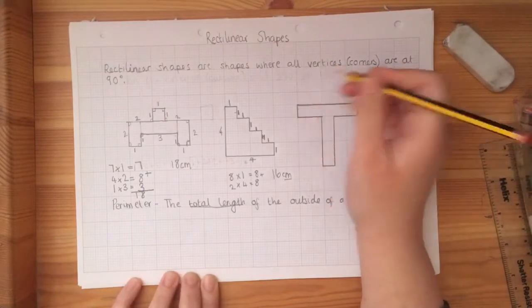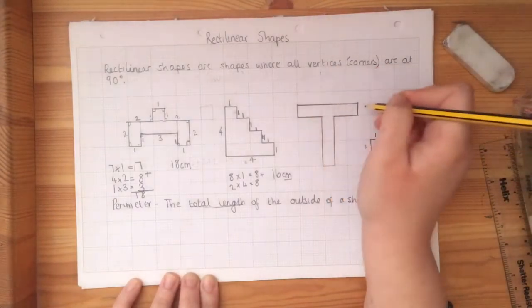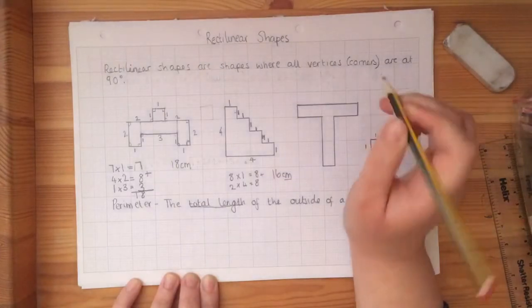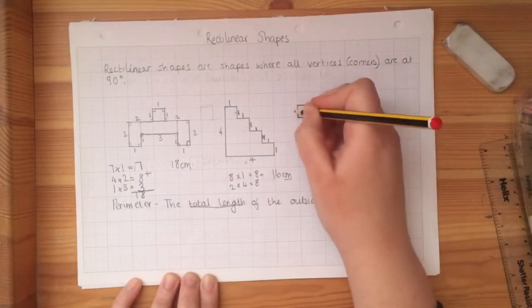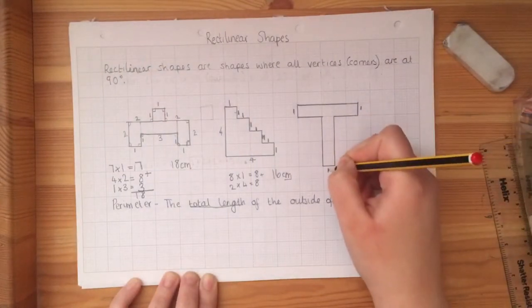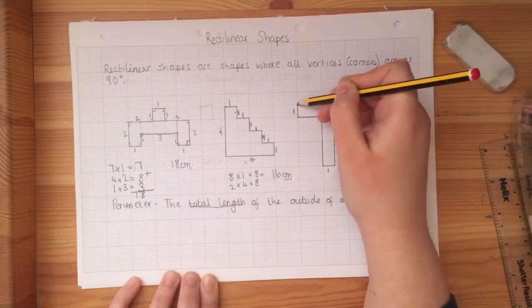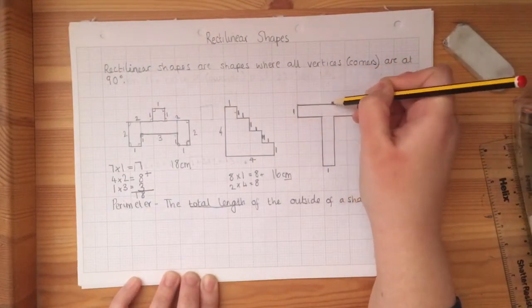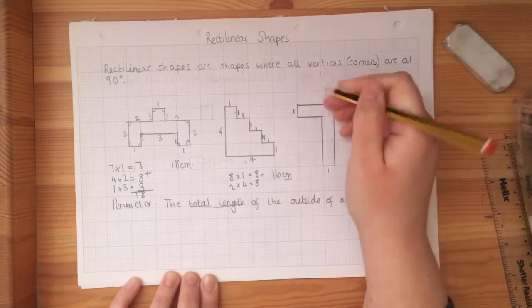This last one, I'll do the writing down the lengths with you, but I want you to have a go adding it together by yourself. So we've got one on each end here. And we've got one on the bottom as well. Now along the top, we've got one, two, three, four, five squares.